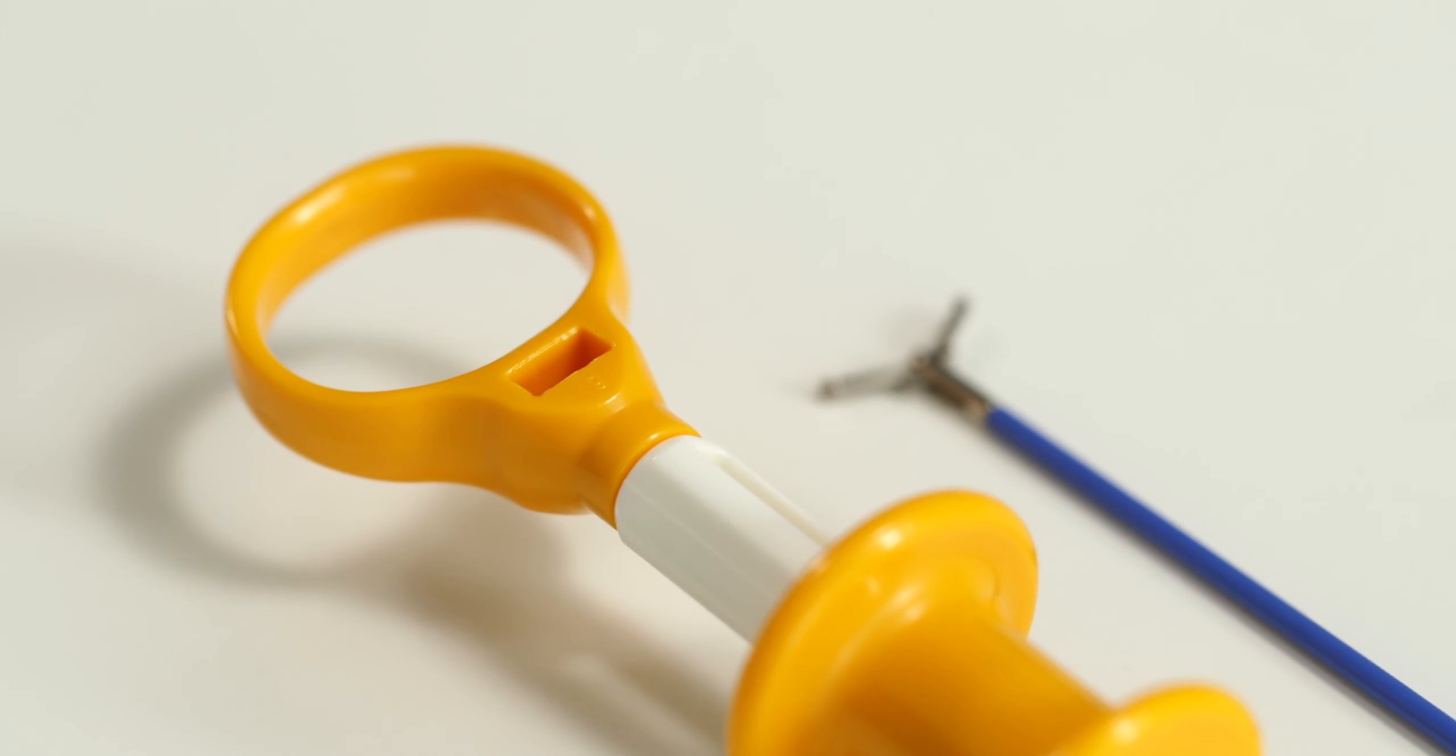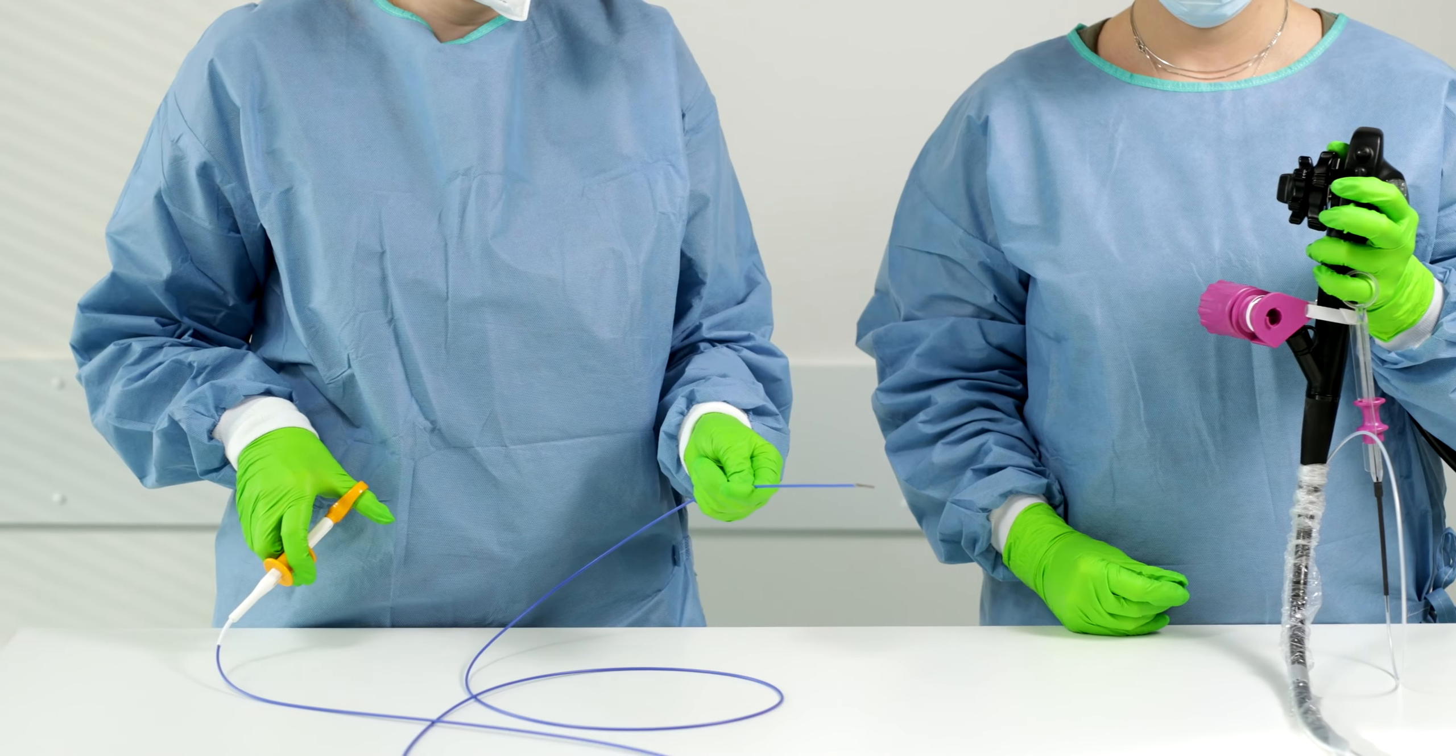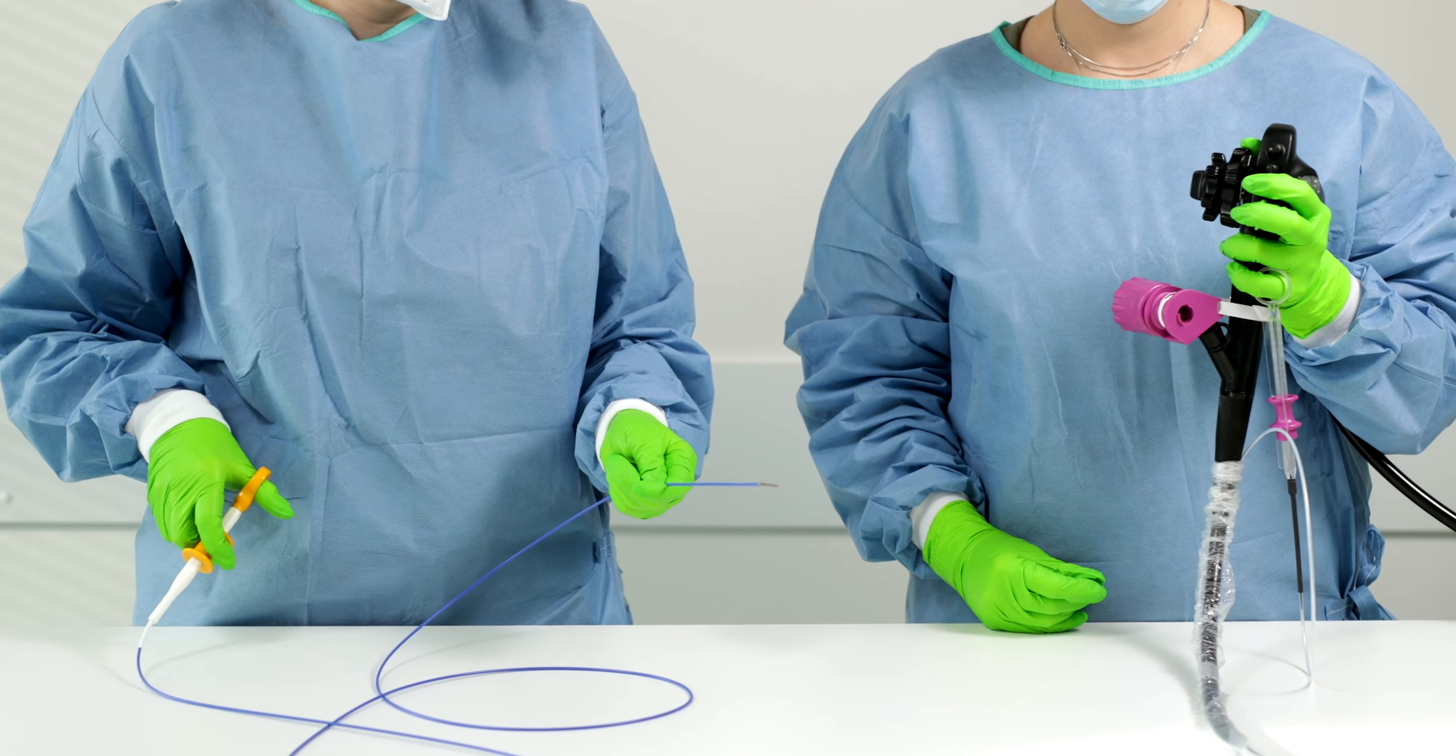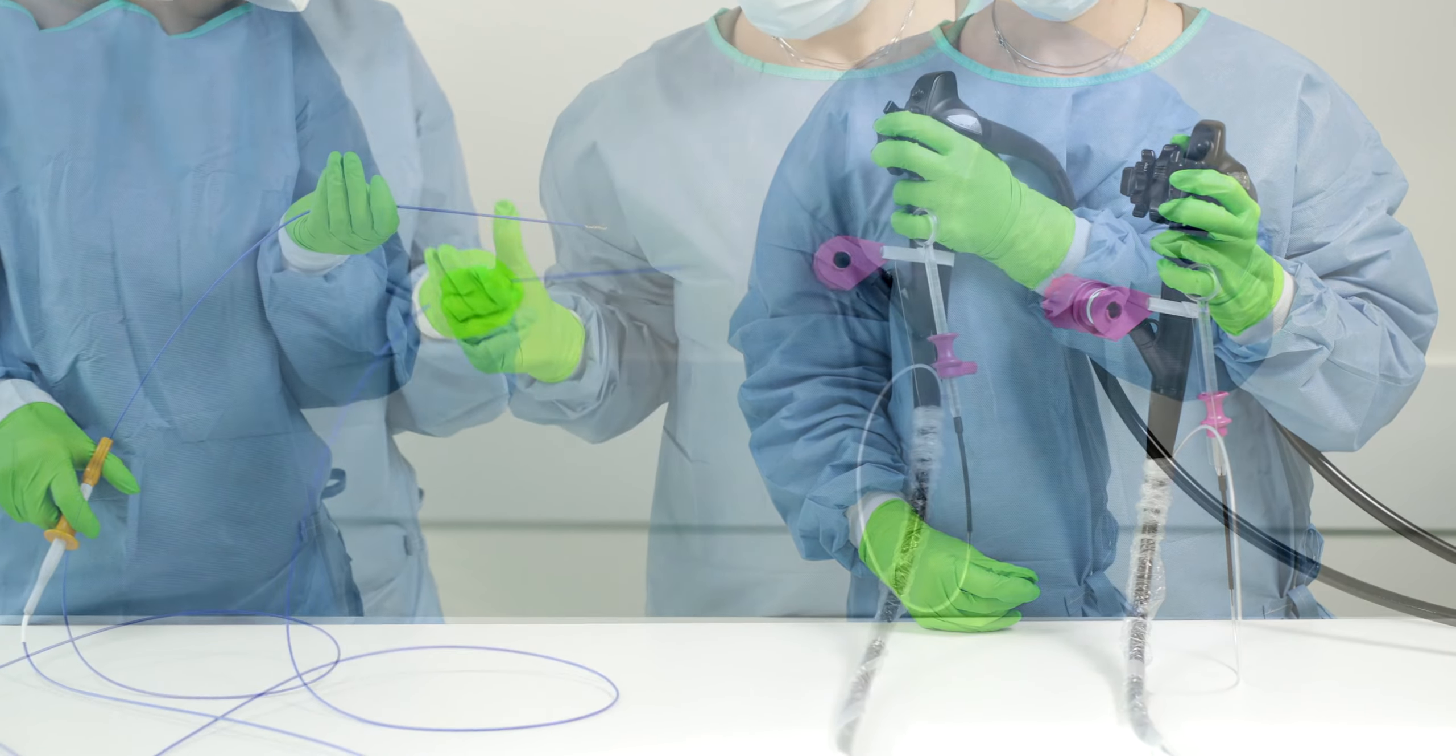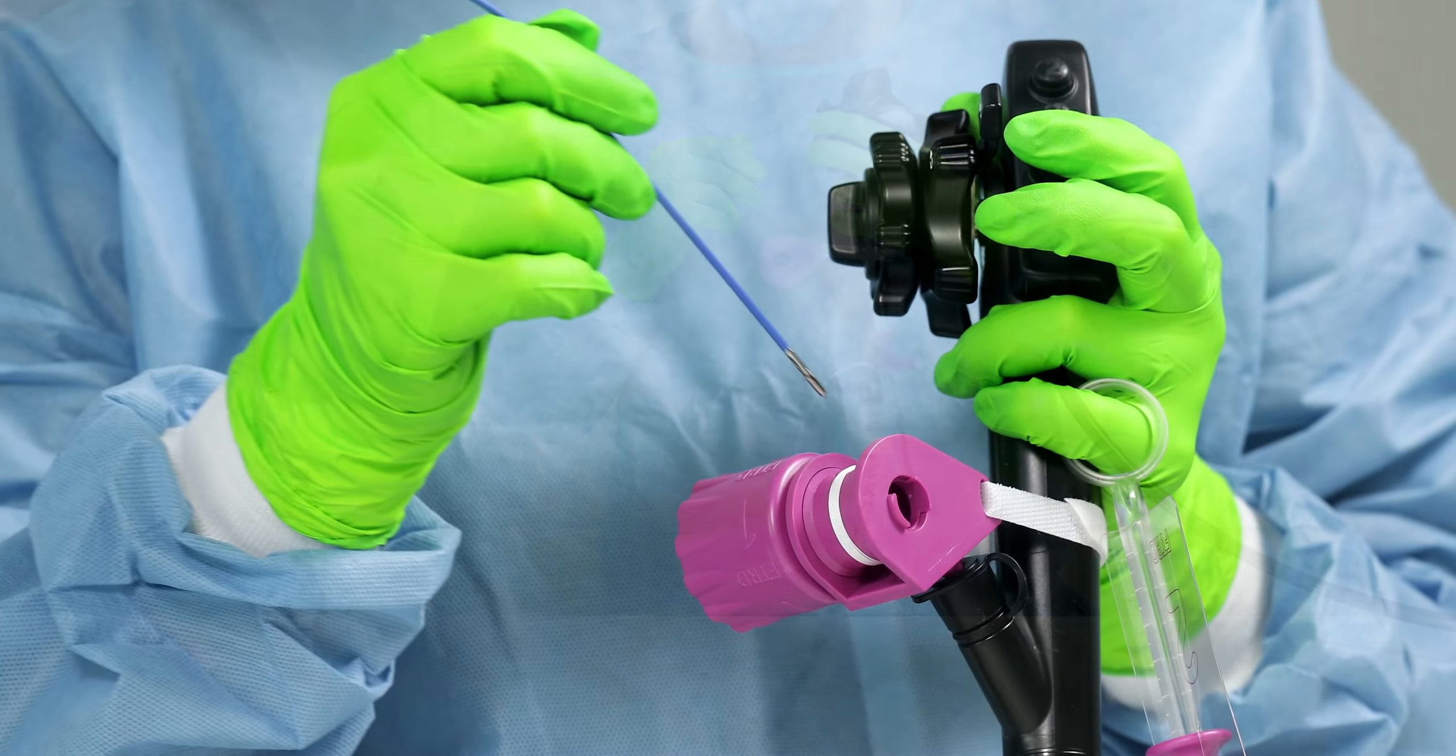While inserting the FTRD grasper into the working channel, it must be ensured that the thread remains slightly tensioned, otherwise it may wind itself around the instrument, making clip application difficult or even impossible.